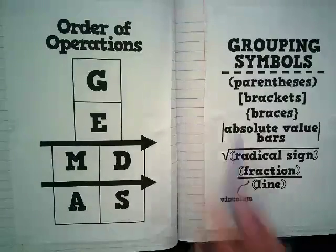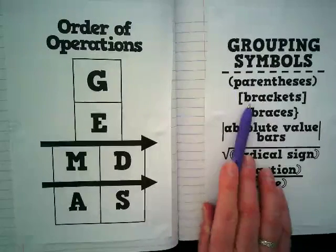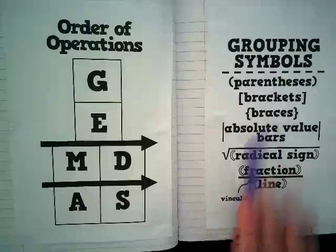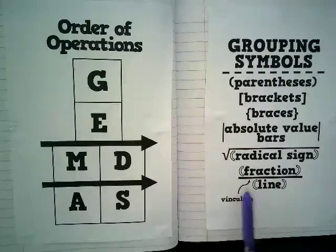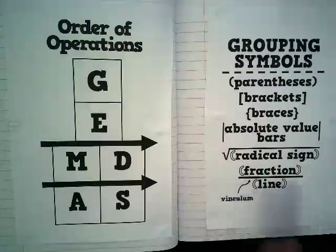Grouping symbols include parentheses, and brackets, and braces, absolute value bars, radical signs, and a fraction line.